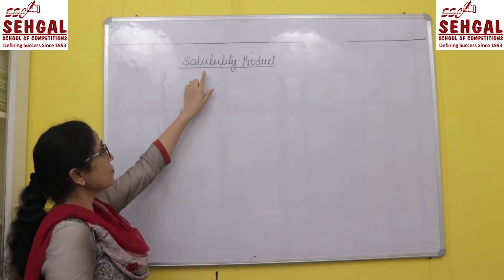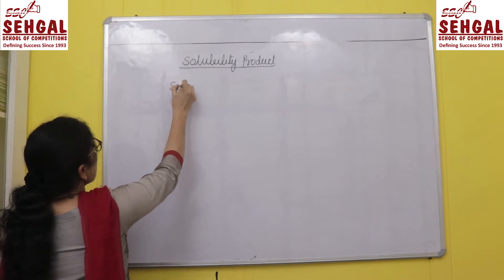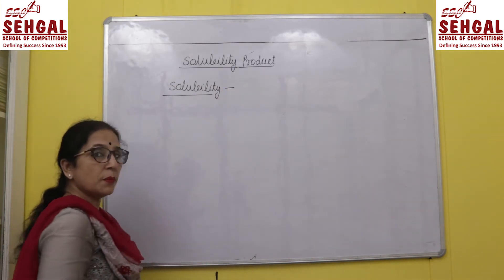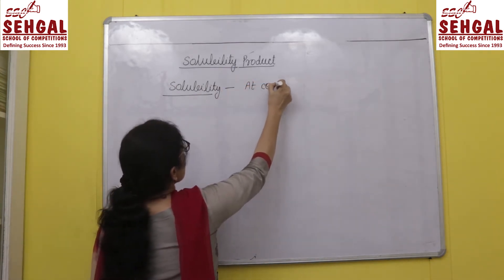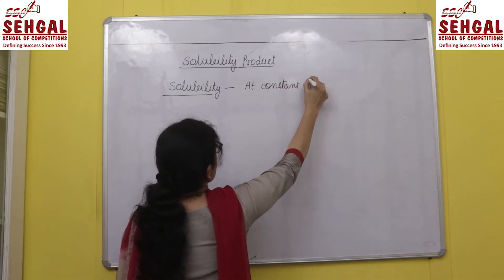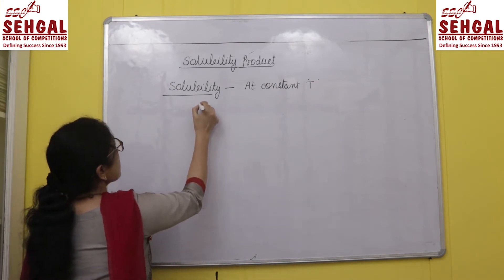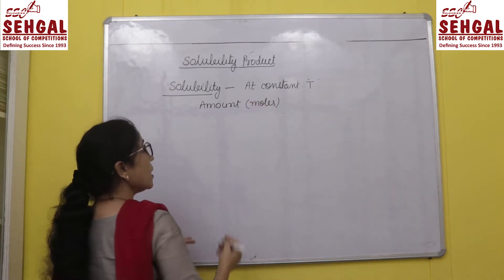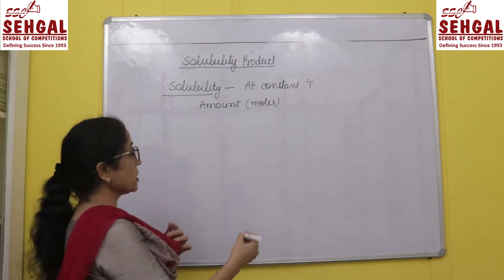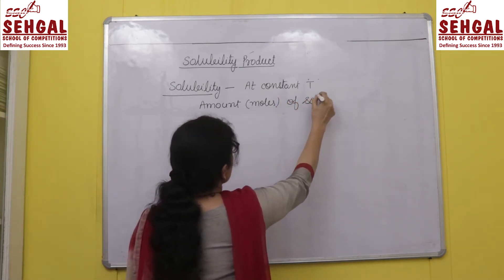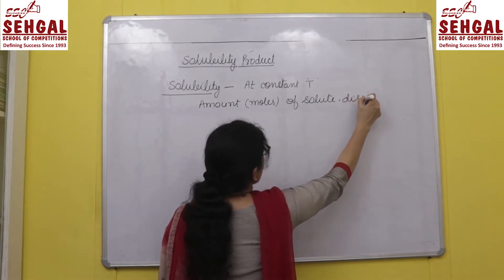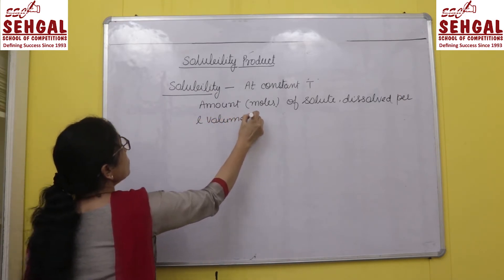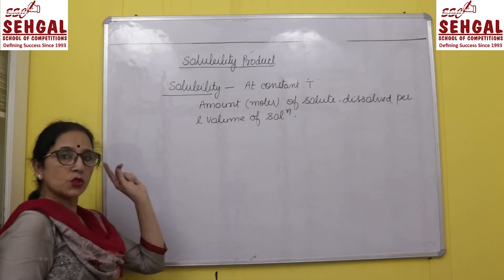This term starts with solubility, so first of all we define what is solubility. Solubility is a temperature-dependent term, so we always mention it at constant or fixed temperature. It is defined as the amount — generally taken in moles, although it can be given in grams per liter as well — of solute dissolved per liter volume of solution. This is defined as solubility.